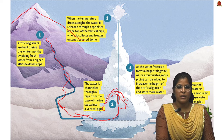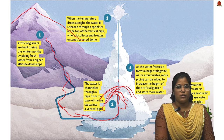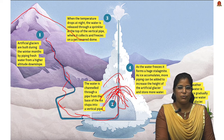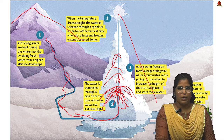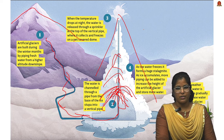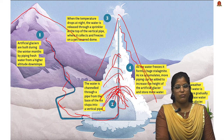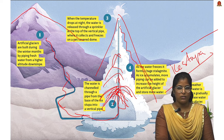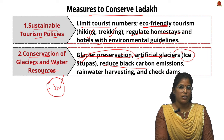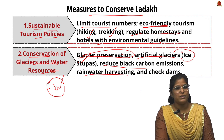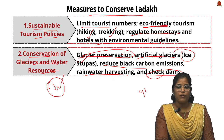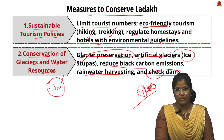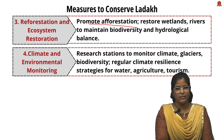The ice stupa continues to grow as the pipe is extended upward. In the morning, as temperature rises, it melts and provides water for domestic use, helping check water depletion. Additionally, we must reduce black carbon emissions, implement rainwater harvesting, and build check dams to prevent GLOF — Glacial Lake Outburst Floods — and the resulting loss of life and property.